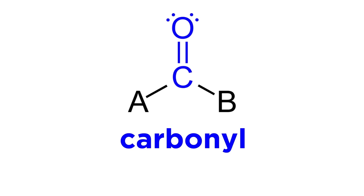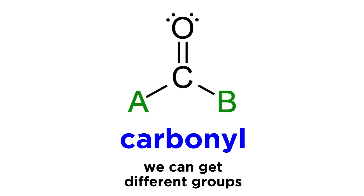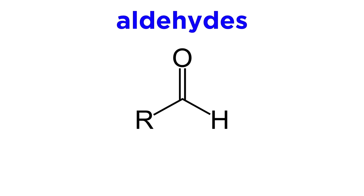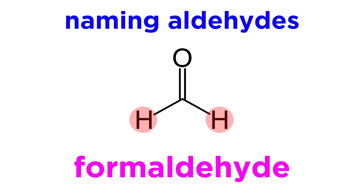Let's now check out a whole class of functional groups that contain something called a carbonyl. A carbonyl is simply a carbon atom with a double bond to an oxygen atom. The oxygen has two bonds and two lone pairs, so it's all set, but the carbon atom will need two more bonds. Depending on what sits on either side of this carbon atom, we can get a variety of different functional groups. First, let's start with the aldehyde. This involves at least one hydrogen to one side of the carbonyl. Typically there will be alkyl on the other side, but having hydrogens on both sides will also result in an aldehyde, commonly referred to as formaldehyde.